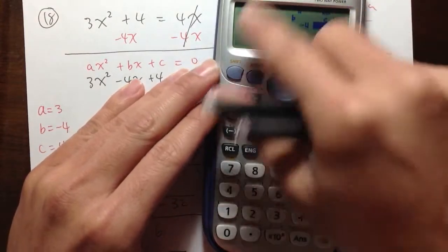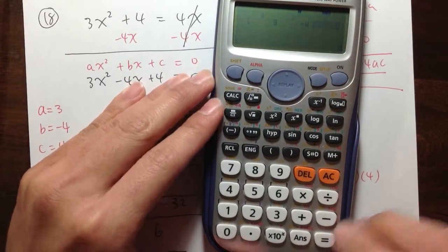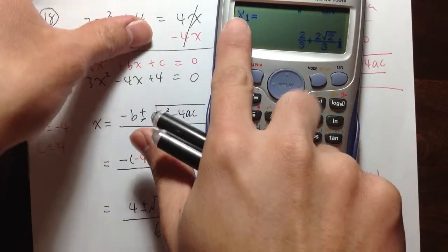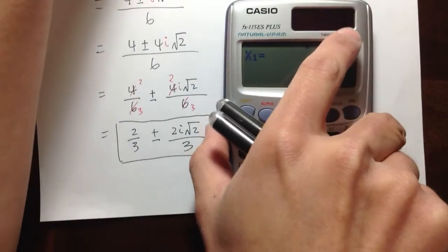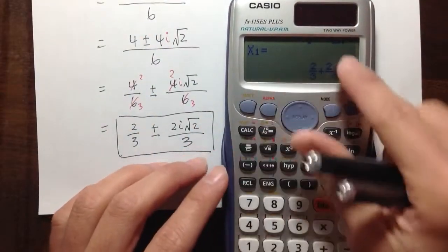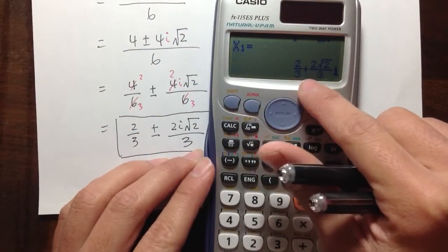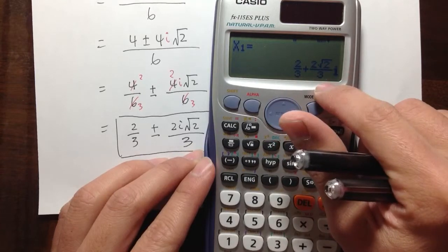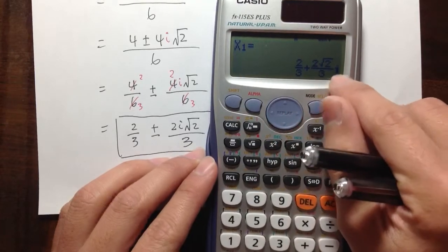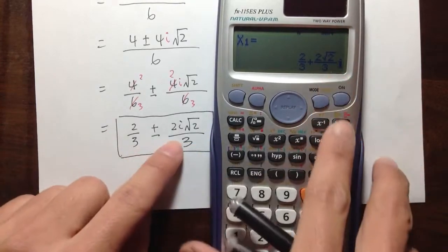Then, after you punch in all that, just hit equal. So then, let's see, the calculator gives us x₁. It says we have 2/3 plus 2√2 over 3i. And that's exactly what we have for the first one.